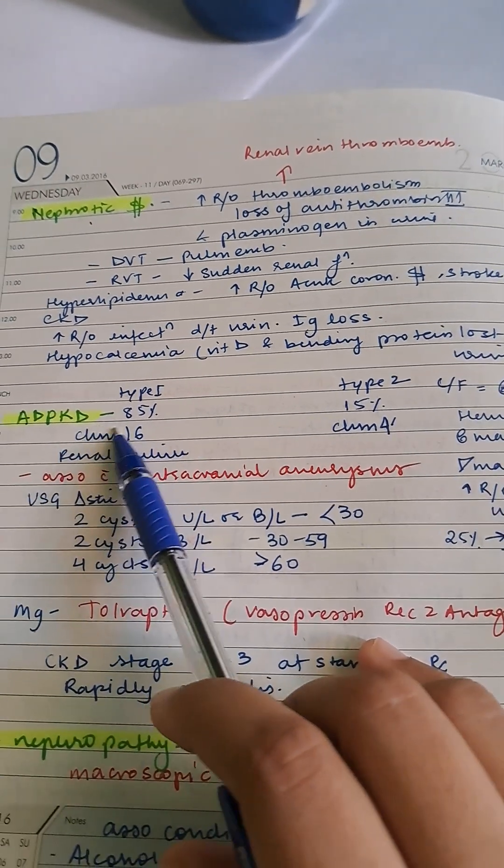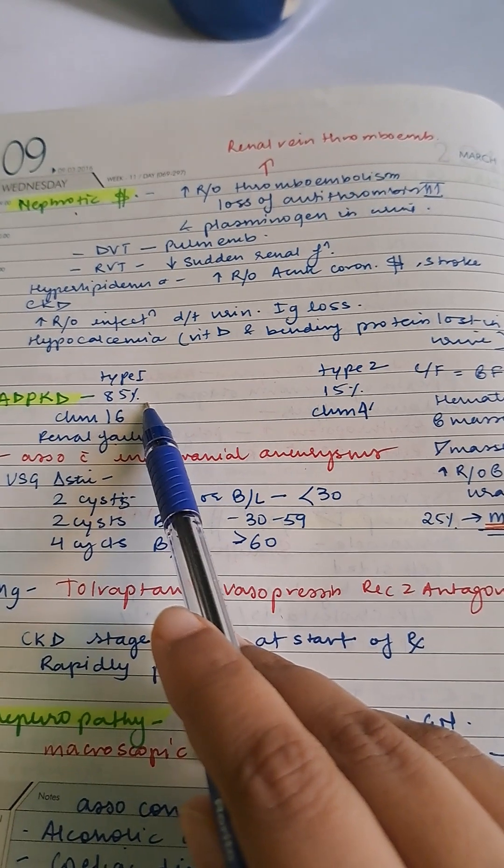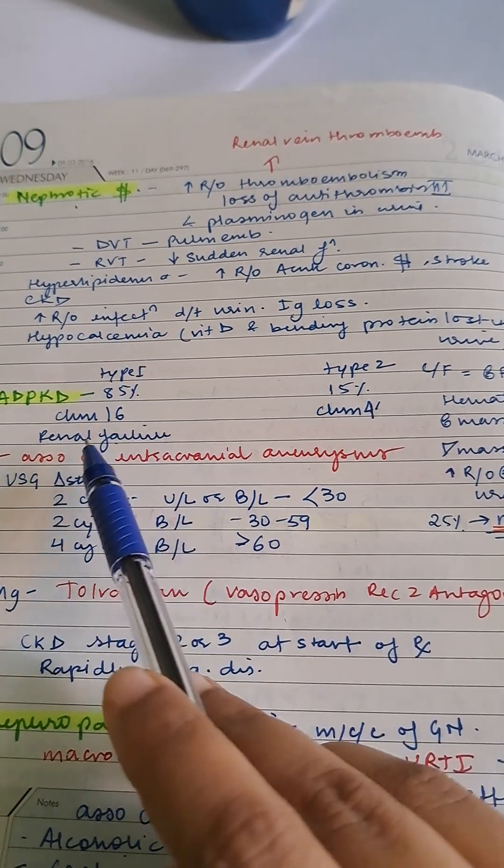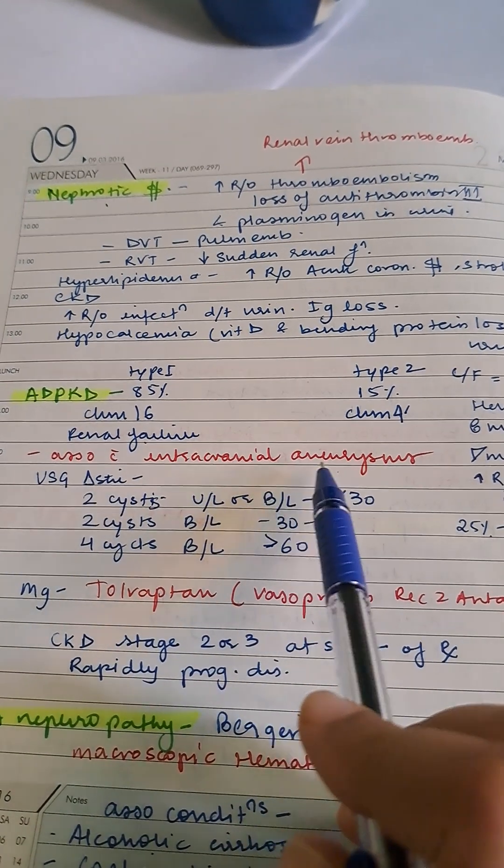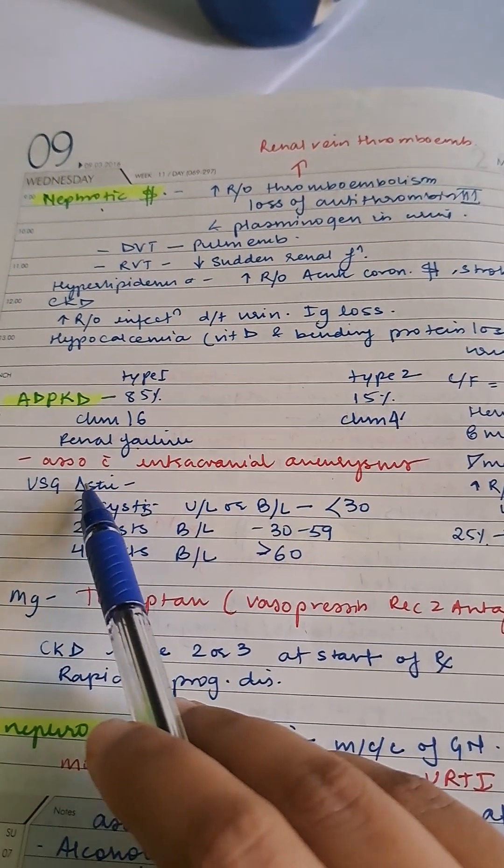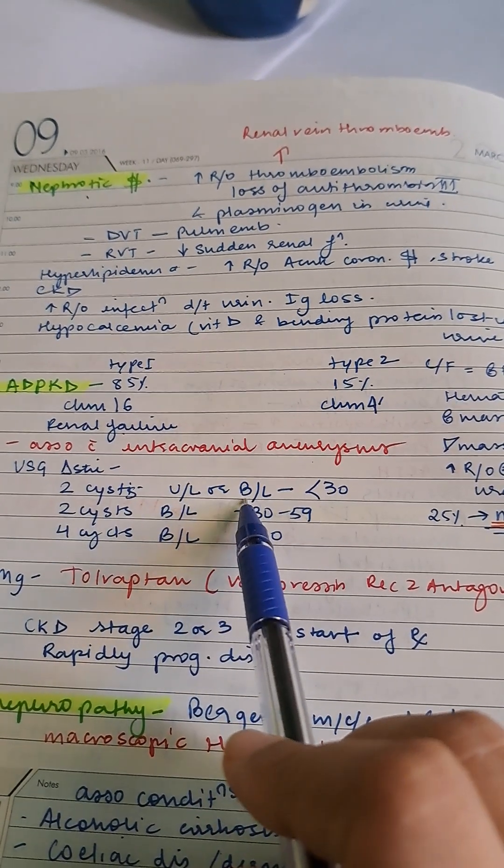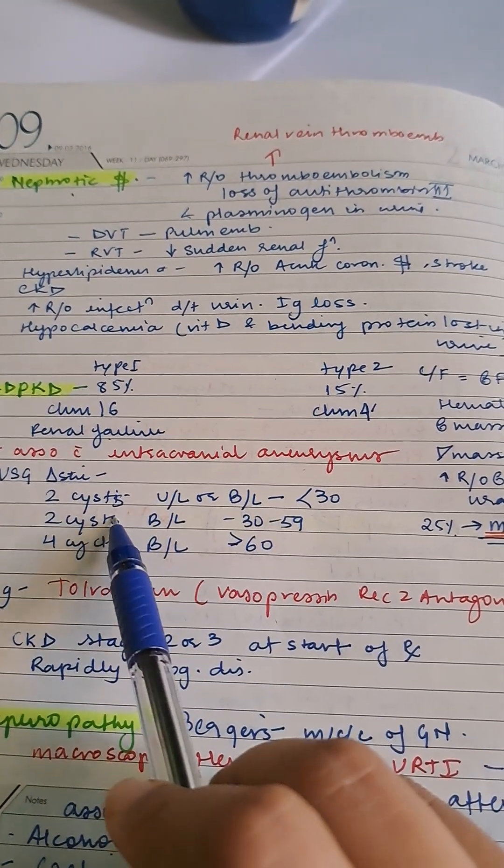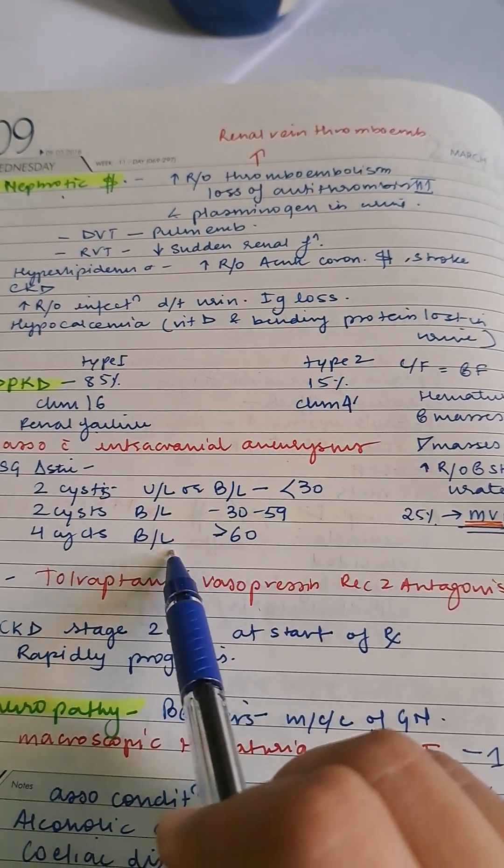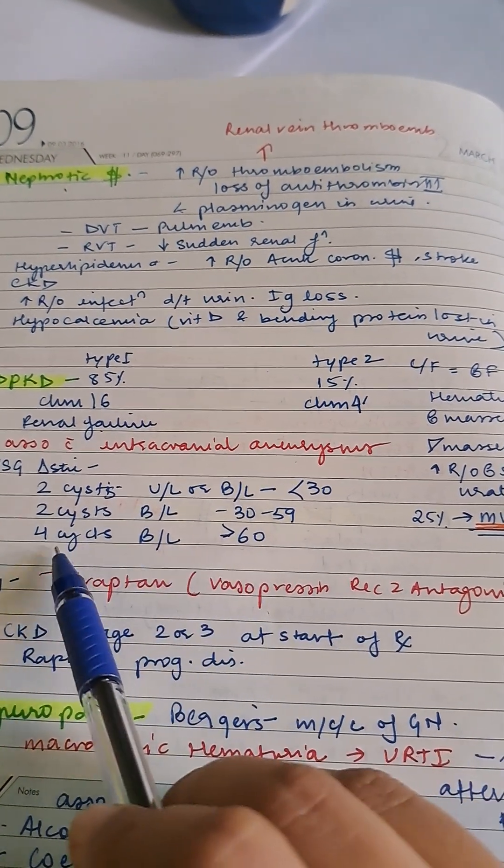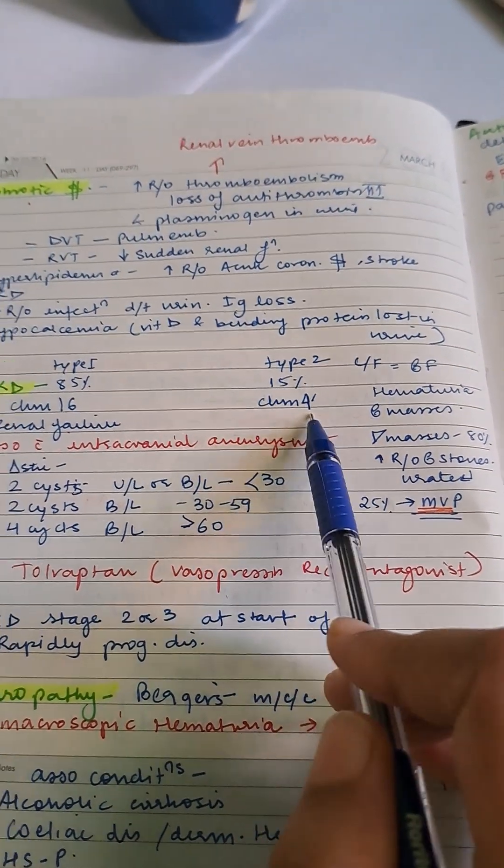Adult polycystic kidney disease has type 1 and type 2. 85% is type 1 on chromosome 16, associated with renal failure and intracranial aneurysms. USG diagnostic criteria: 2 cysts unilateral or bilateral under age 30, 2 cysts bilateral in 30-59 years, and 4 cysts bilateral in over 60. Type 2 is 15% on chromosome 4.